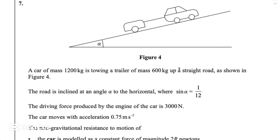Hi there. Welcome back to my channel. In this video, I will answer question number 7 from Pearson and Excel A Level Exam for Mechanics 1. This exam is taken in the May 2023 session, paper reference code WME01-01.